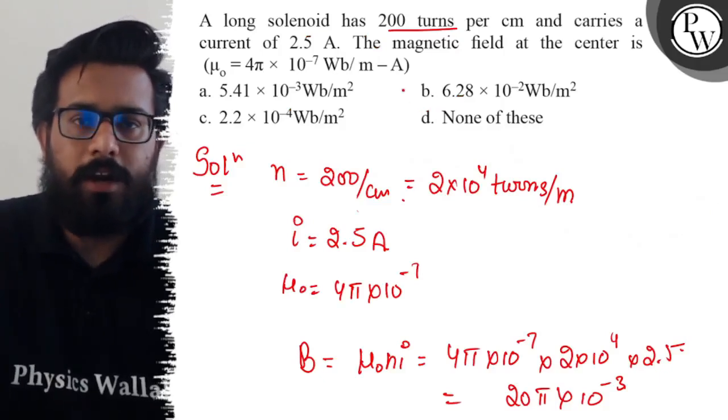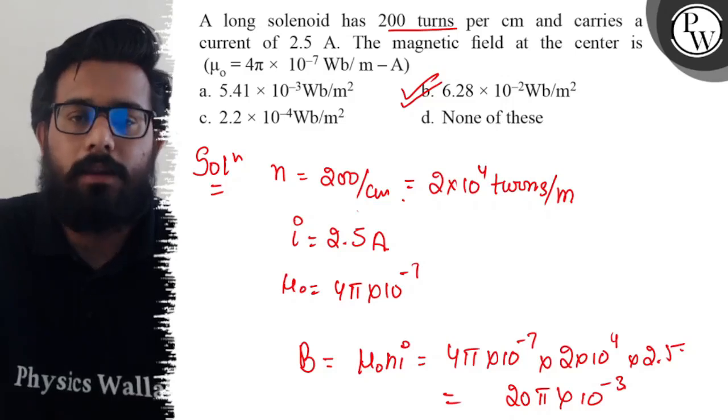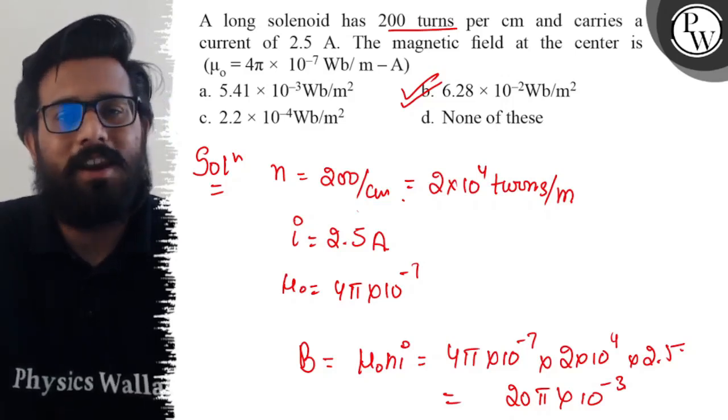So 6.28 × 10^-2 Weber per meter square. You have to mark option B and your B option is absolutely correct. I hope you got the concept of this question very well.